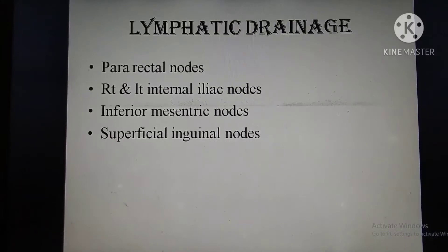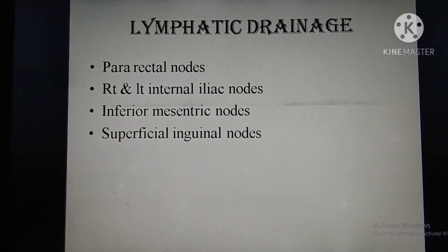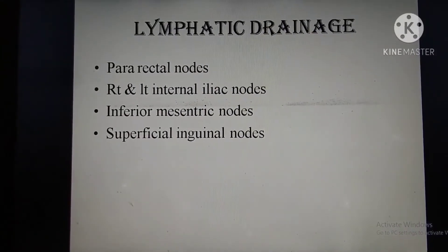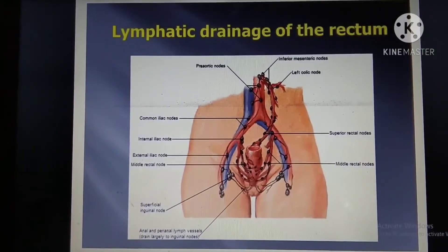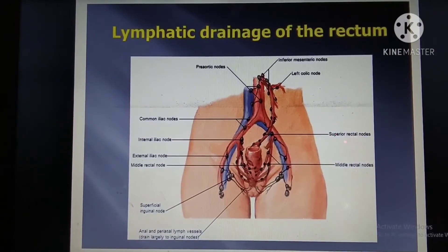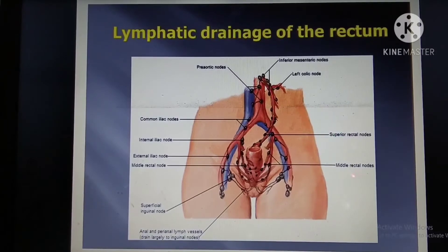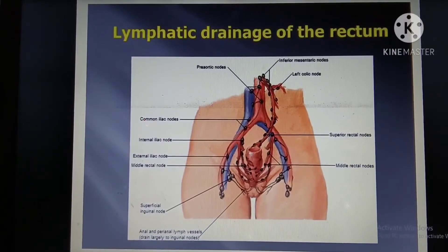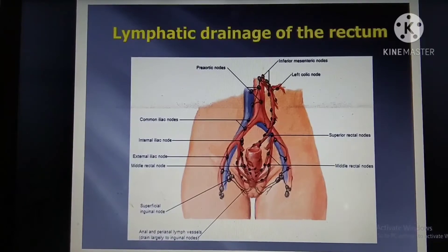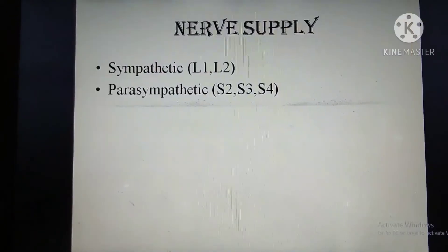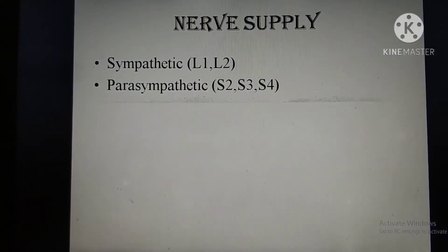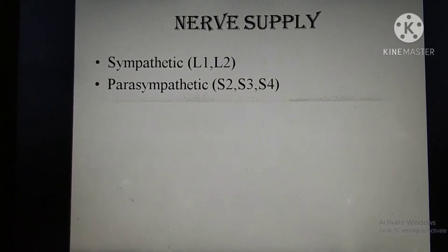Lymphatic drainage goes to the pararectal nodes, right and left internal iliac nodes, inferior mesenteric nodes, and superficial inguinal nodes. The diagram shows superior rectal nodes, middle rectal nodes, internal iliac nodes, and common iliac nodes.